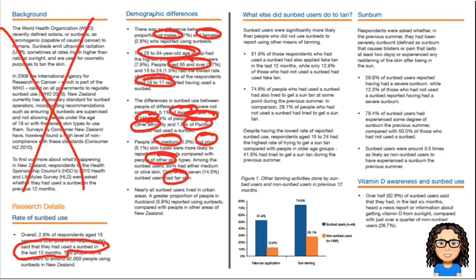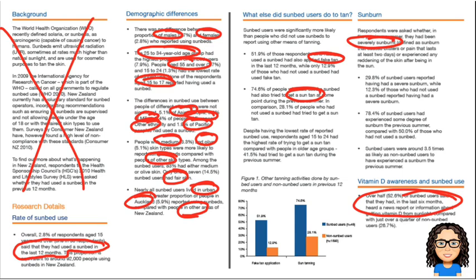Is there any other information? They've talked about people living in urban areas — looking at people living in Auckland versus other areas in New Zealand — so that would be another variable. They've also talked about people who use fake tan, people who tried to get a suntan during the summer, whether they've been severely sunburnt or not, and information about vitamin D — whether they had heard a news report about vitamin D over the last six months. So there's a whole bunch of different variables, and what you need to be able to do is evaluate how would they have collected the data, how accurate would that be, and what are some of the flaws about it. That's what we want to do for this section.